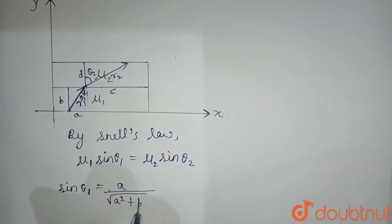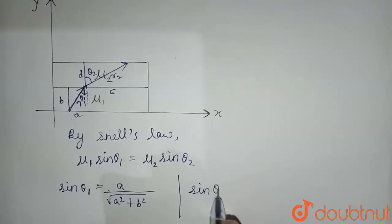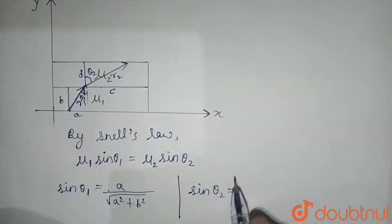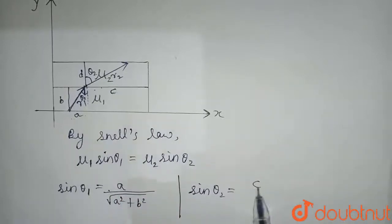Now sin θ₂: similarly, perpendicular upon hypotenuse. Here the perpendicular is c and the hypotenuse will be √(c² + d²).